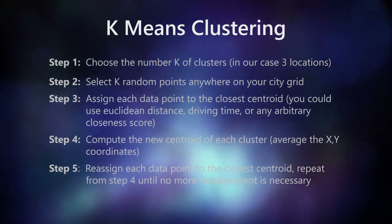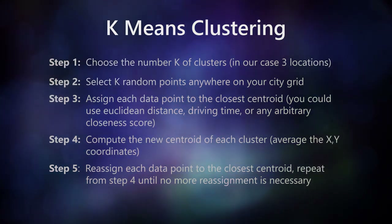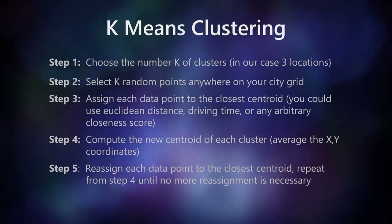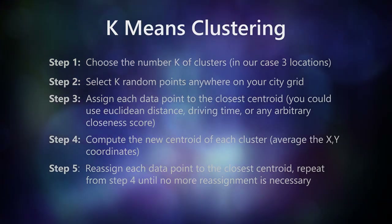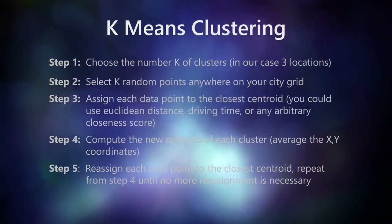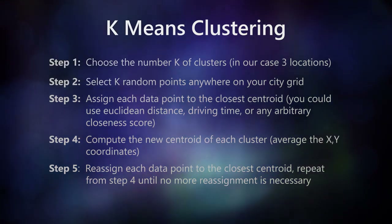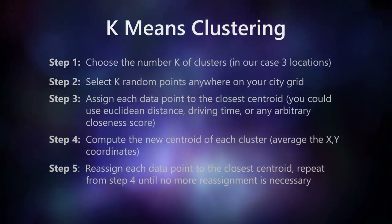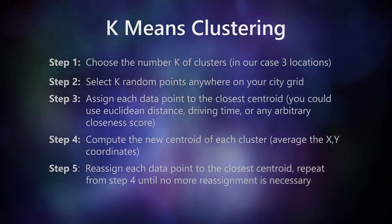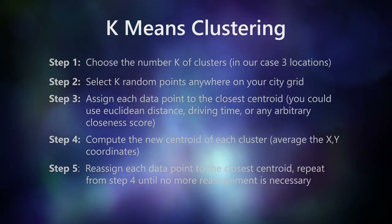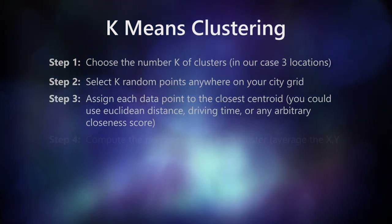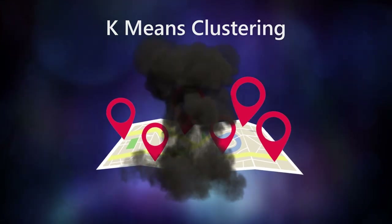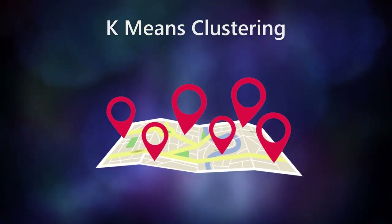Step 5: Reassign each data point to the closest centroid. Repeat from step 4 until no more reassignment is necessary. Note that the algorithm starts with a random initialization. It then continuously iterates until we reduce the error as low as it will go — in this case, we can go to zero error where there is no further need to reassign clusters. And BOOM! You've got your locations. So now good luck with all the zoning and permits.